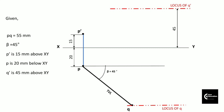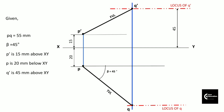Now we can draw a projector line from point Q vertically upwards. Wherever it cuts the locus of point Q-dash, you get point Q-dash. Draw a line joining point P-dash and Q-dash — that would be the front view of the line. This line makes an angle alpha with the XY line; the front view P-dash Q-dash makes angle alpha with the XY line.